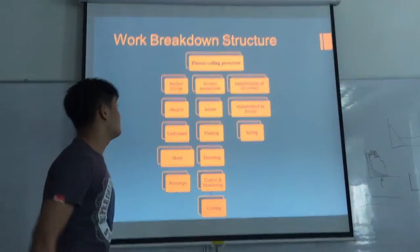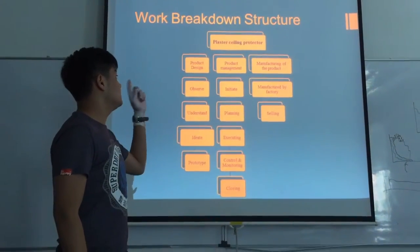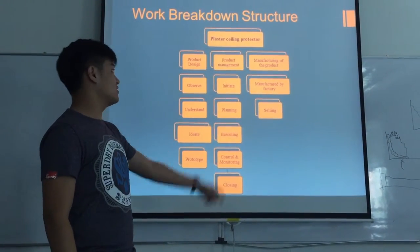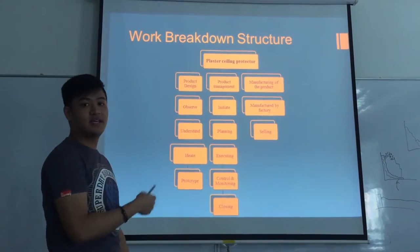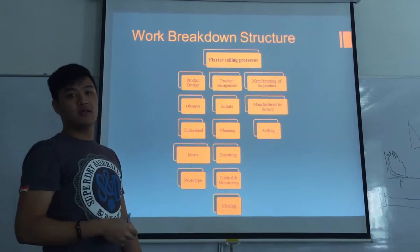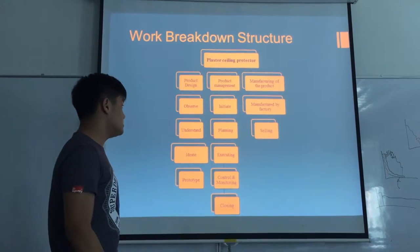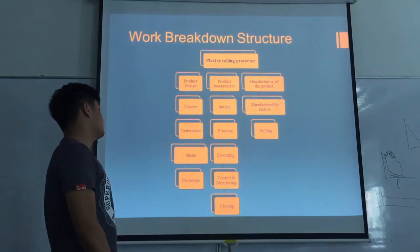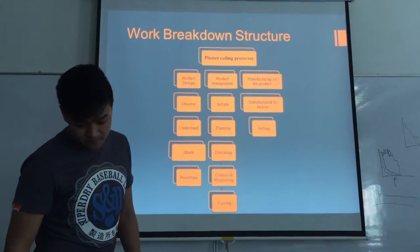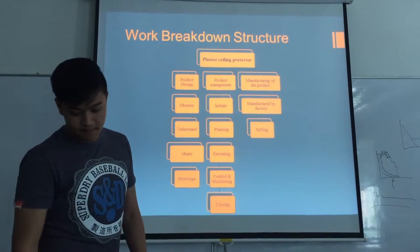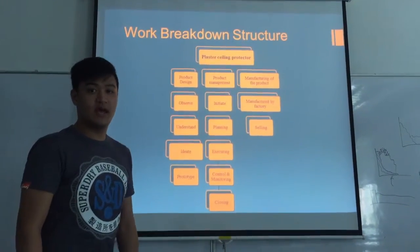This is the breakdown structure of our project. We break it into product design, product management, and manufacturing of the product. Under product design, we use observe, understand, ideate, and prototype to execute our project. We also monitor the progress of our project, and lastly, we plan to have our prototype manufactured by a factory and ready to be sold at the market.